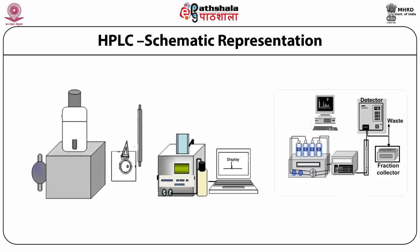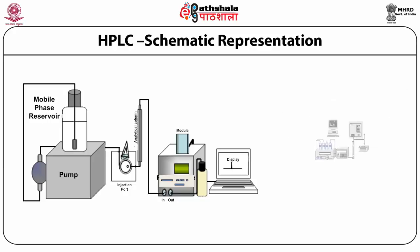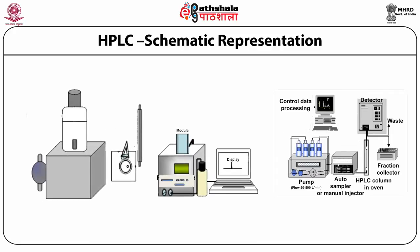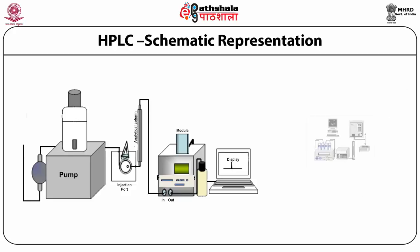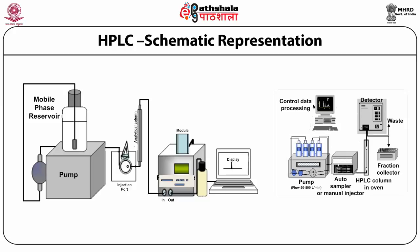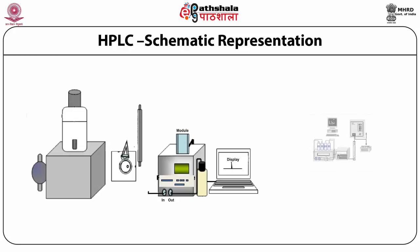Slowly the separation happens: a compound having higher affinity towards the stationary phase stays more time in the column, while one with low affinity elutes sooner. In a typical C18 column with a 1:1 acetonitrile-water or methanol-water mobile phase, acetone elutes first and then benzene. When compounds come out, they are identified using a detector. The signals generated in the detector are converted to electrical signals, integrated by software, and displayed as peaks in the output device.